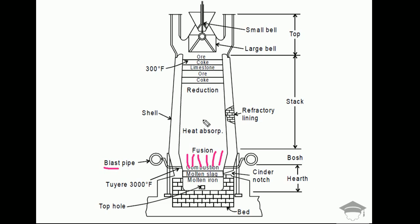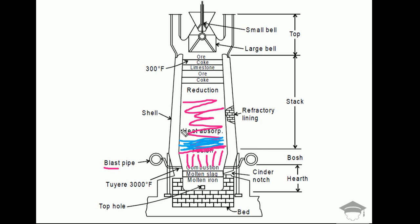Coke helps further enhance the combustion process to provide heat to the iron ore. Finally, all the iron ore, coke, and limestone melt and form layers based on density. The heaviest material — iron — settles at the bottom. Above that come oxides and other impurities like magnesite, then unburned carbon and lighter oxides move further up. The bottommost layer, which is the most important, is the molten pig iron.